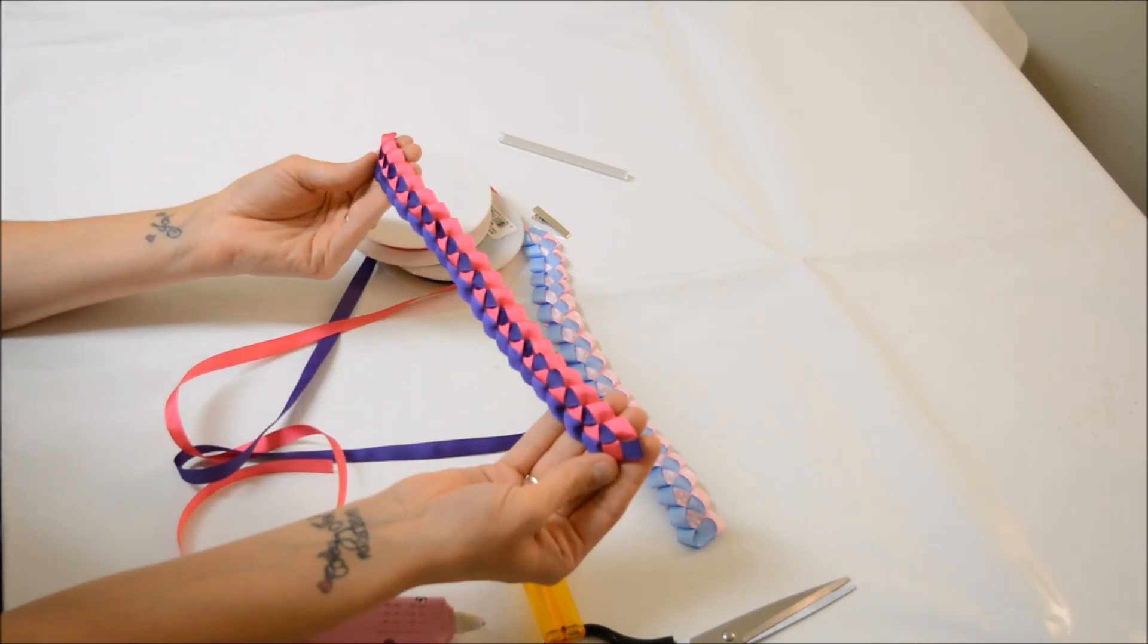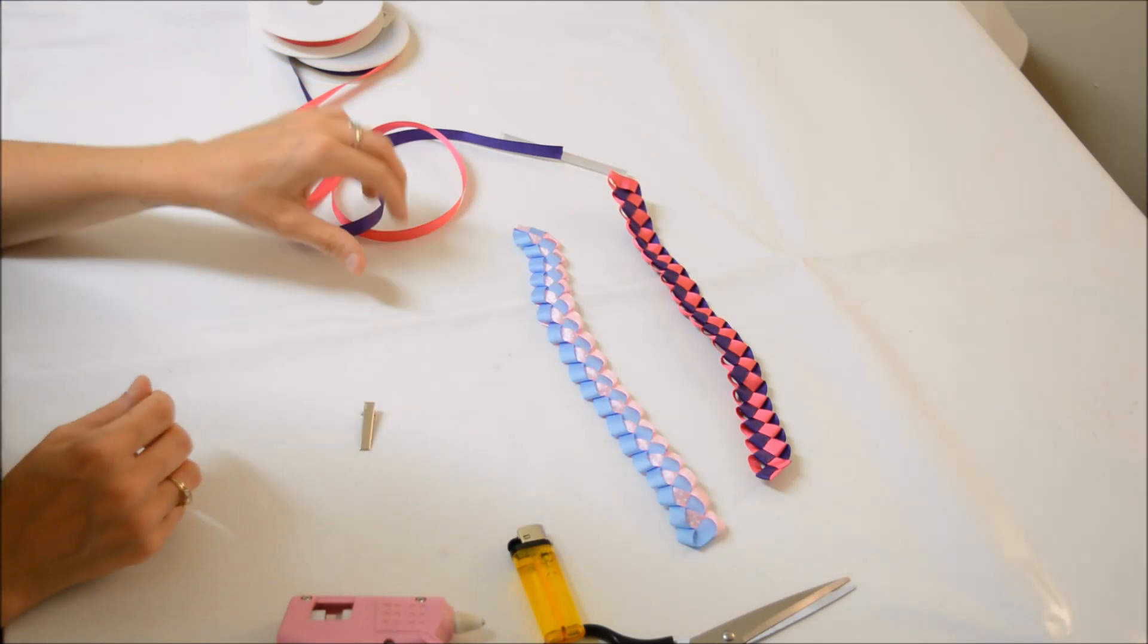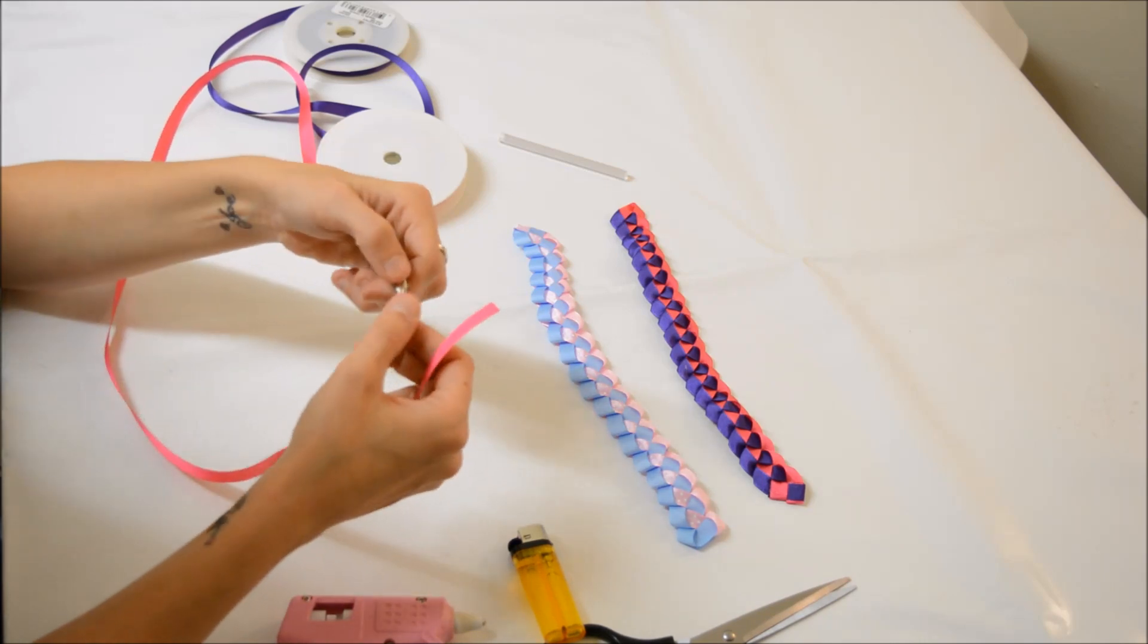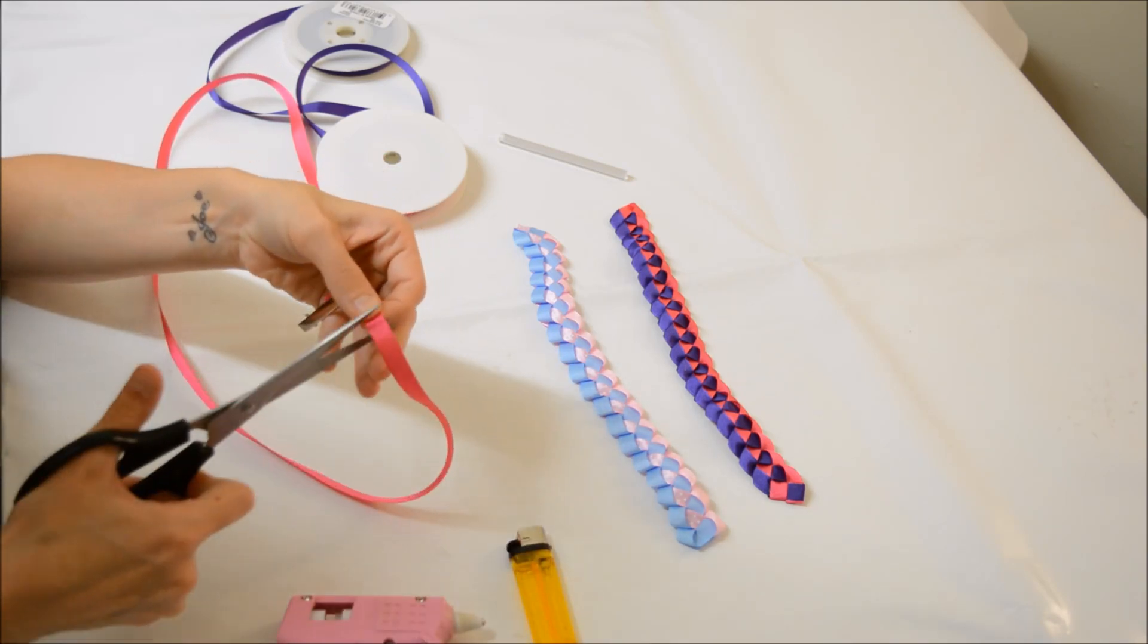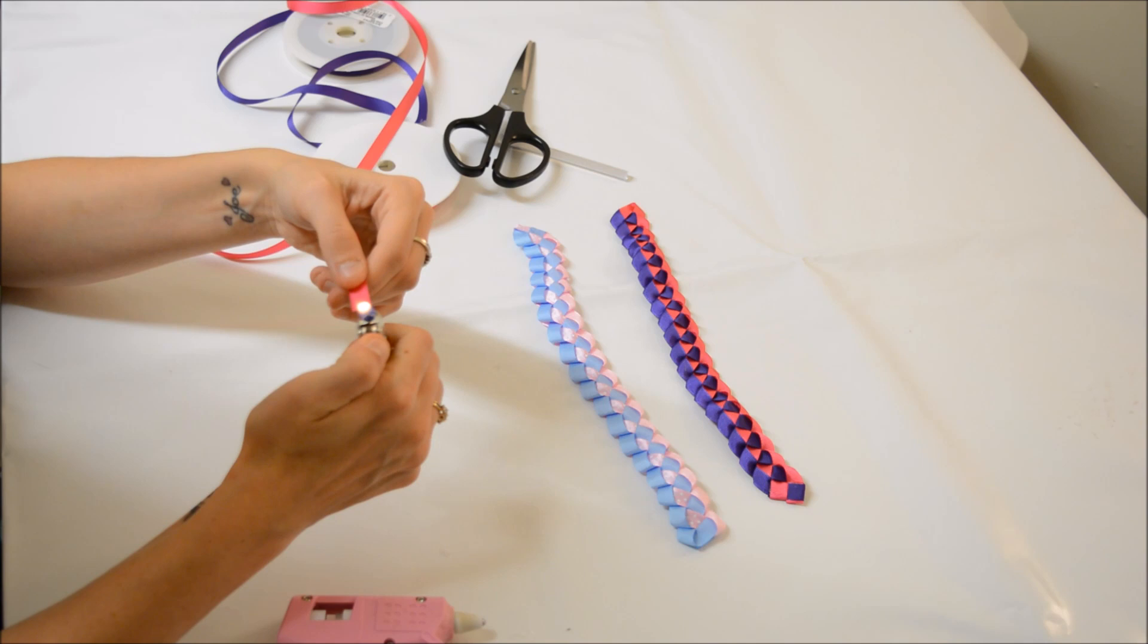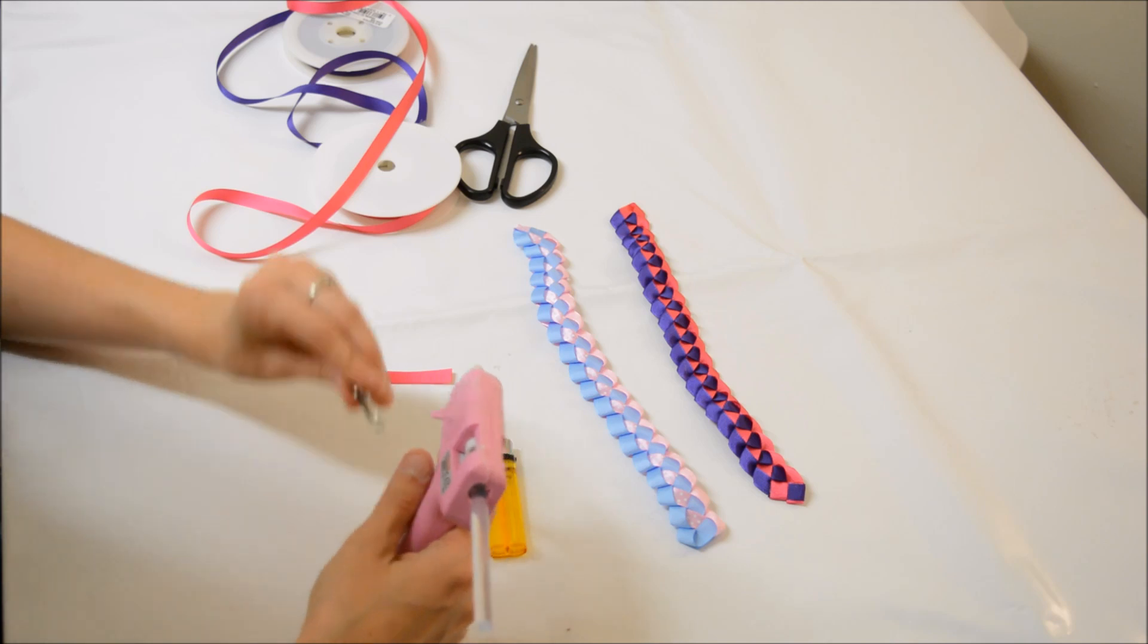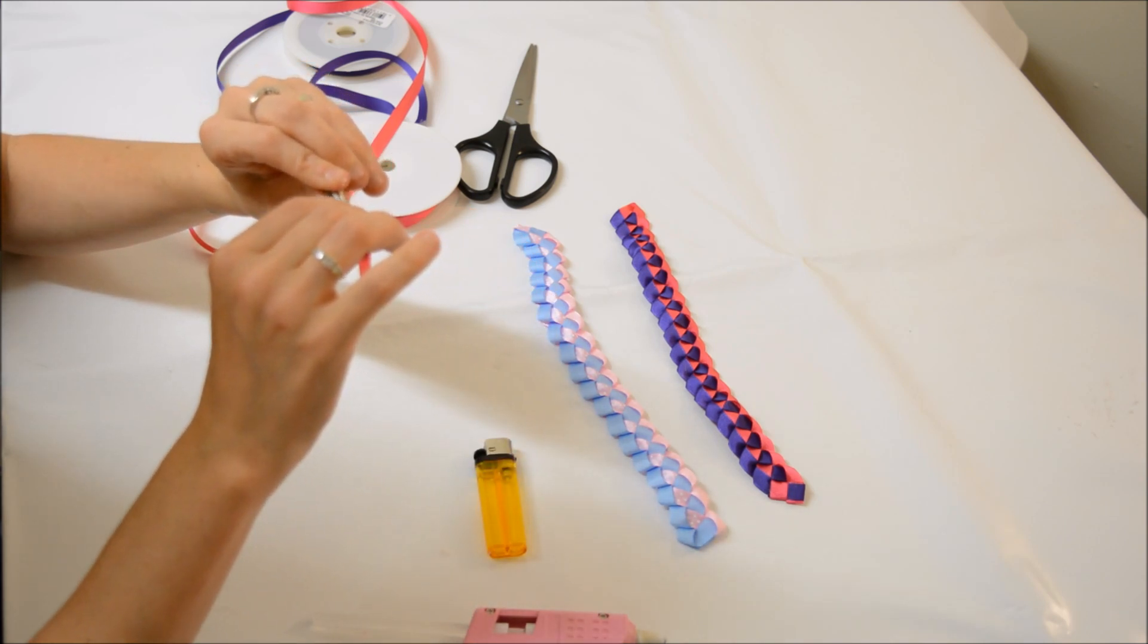And there is your bun wrap. Now what I'm going to do is take my little clip. For this I'm going to choose the pink ribbon. I'm just going to measure out how much ribbon I need and trim. Now I'm going to quickly heat seal the ends, open my clip, apply glue, and set the ribbon in place.